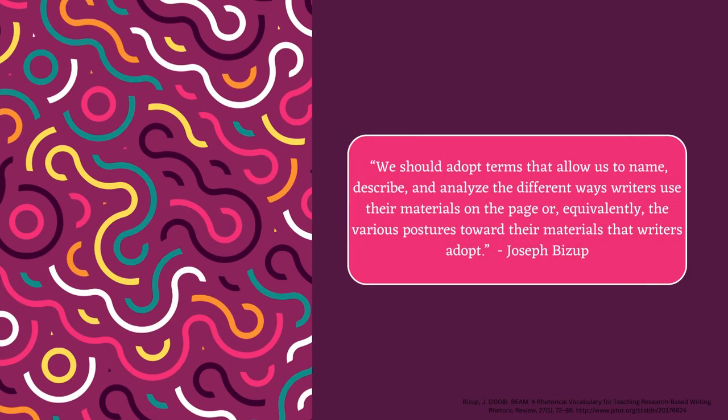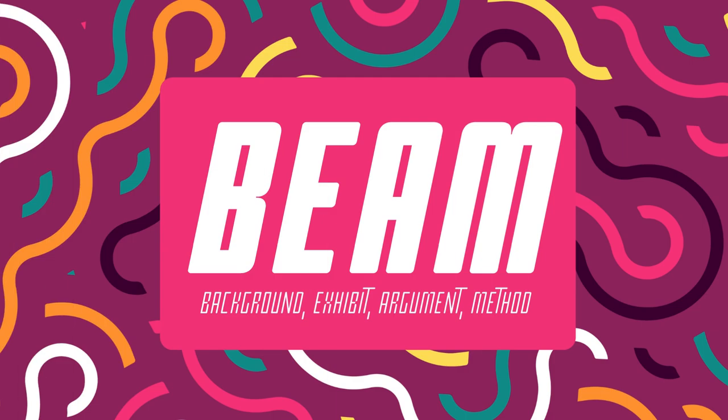Bissip had this to say in the 2008 paper that outlined its framework: "We should adopt terms that allow us to name, describe, and analyze the different ways writers use their materials on the page, or, equivalently, the different postures towards their materials that writers adopt." Thus, the acronym BEAM stands for four different types of sources, separated by how they are used within research-based writing.